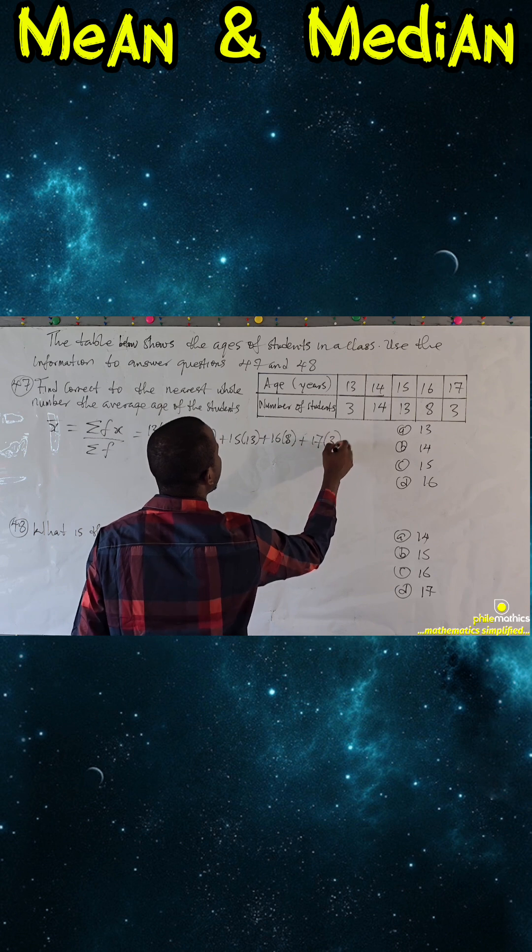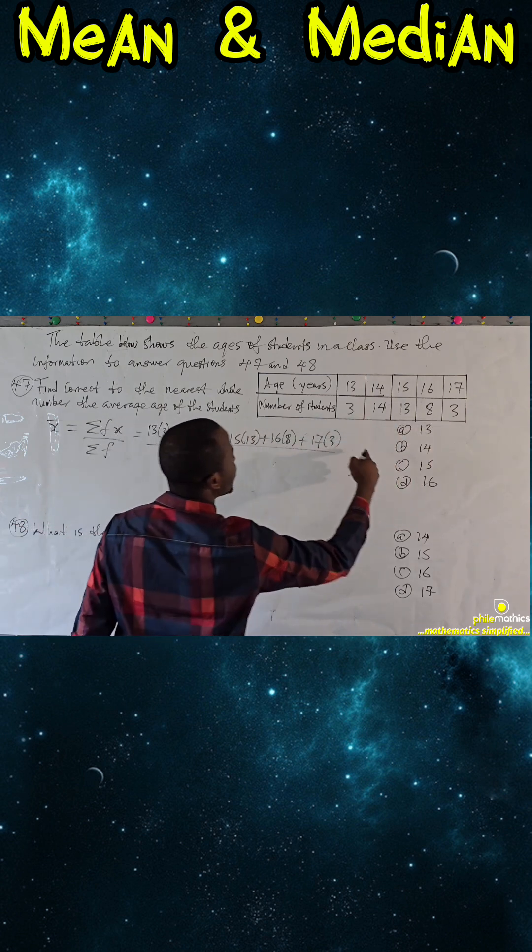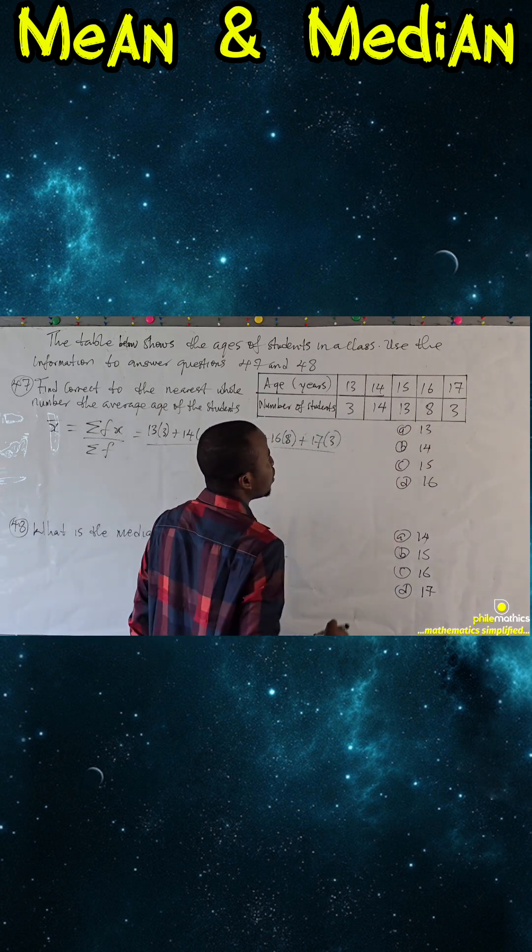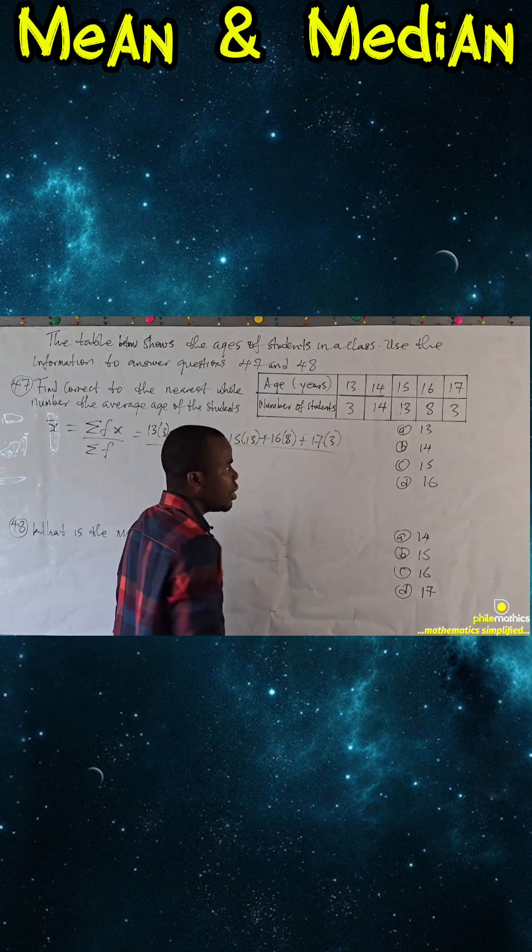3 plus 14 is 17, plus 13 is 30, plus 8 is 38, plus 3 is 41. So we have 41 over 41.